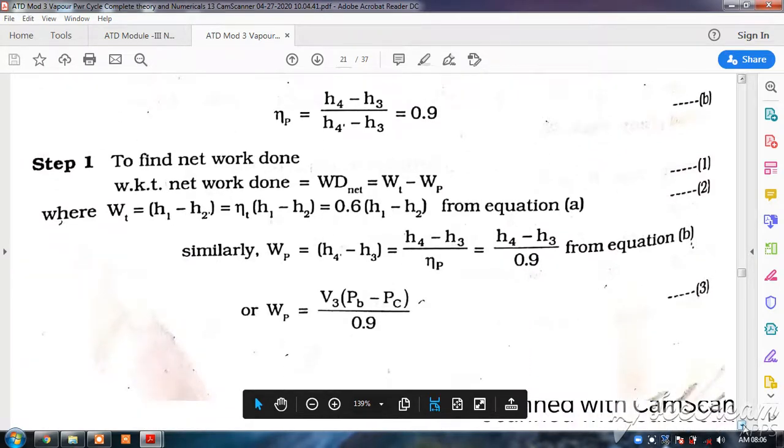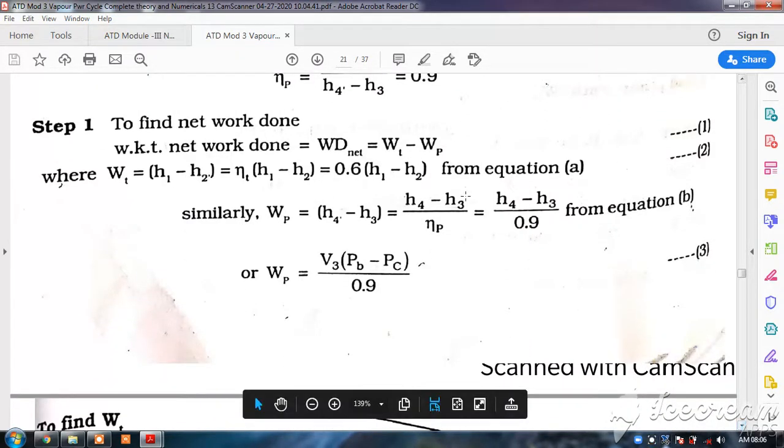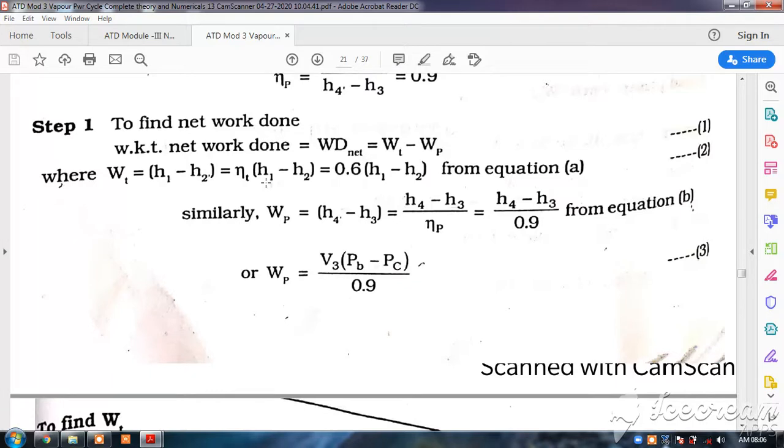To find out the work done, the work done equals turbine work minus pump work. Turbine work is equal to H1 minus H2 dash, that is efficiency into H1 minus H2, that is 0.6 into H1 minus H2.